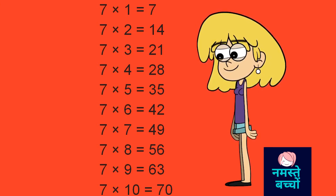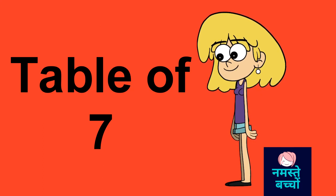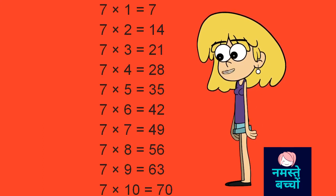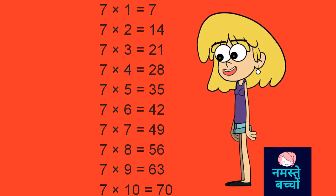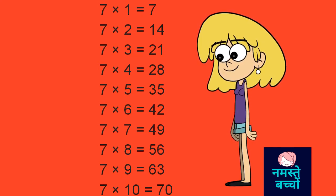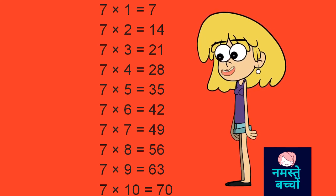7 10's are 70. Table of 7. 7 1's are 7, 7 2's are 14, 7 3's are 21, 7 4's are 28, 7 5's are 35, 7 6's are 42, 7 7's are 49, 7 8's are 56, 7 9's are 63, 7 10's are 70.